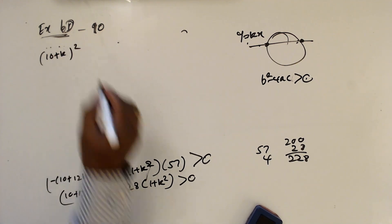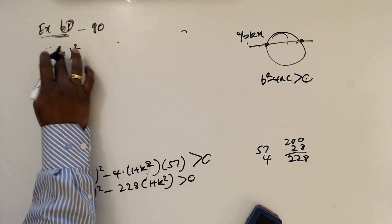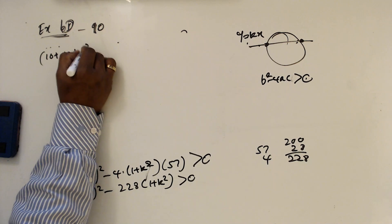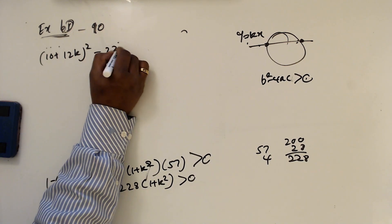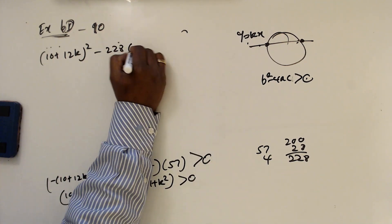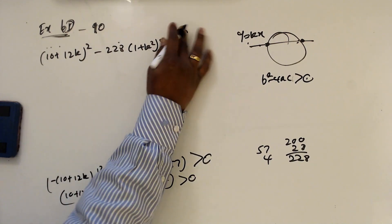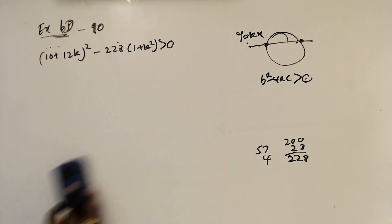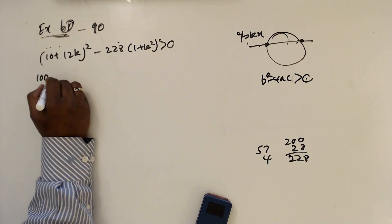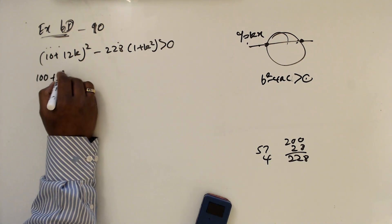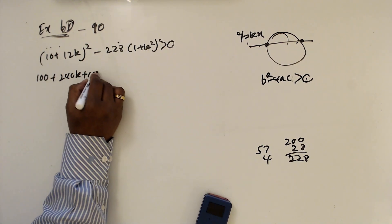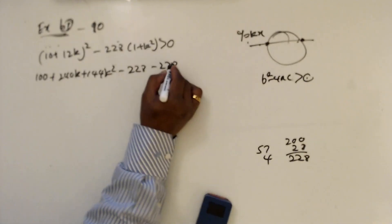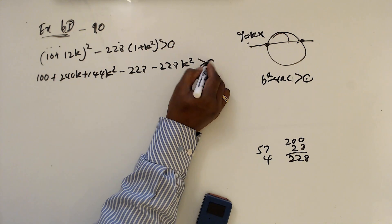Expanding: 100 plus 240k plus 144k² minus 228 minus 228k² greater than 0. Combining like terms gives -84k² plus 240k minus 128 greater than 0.